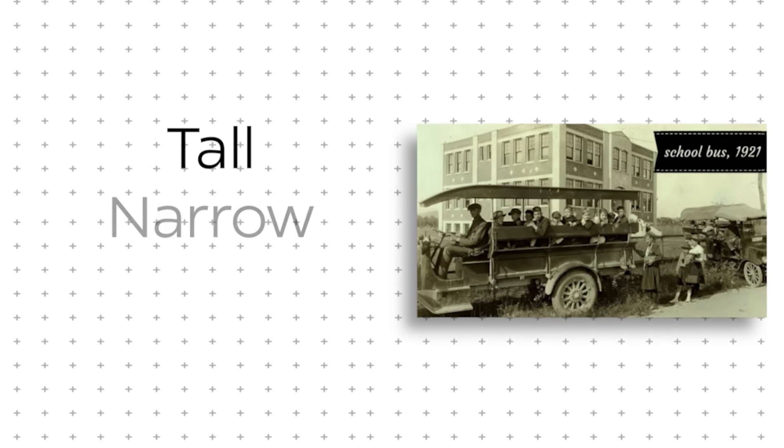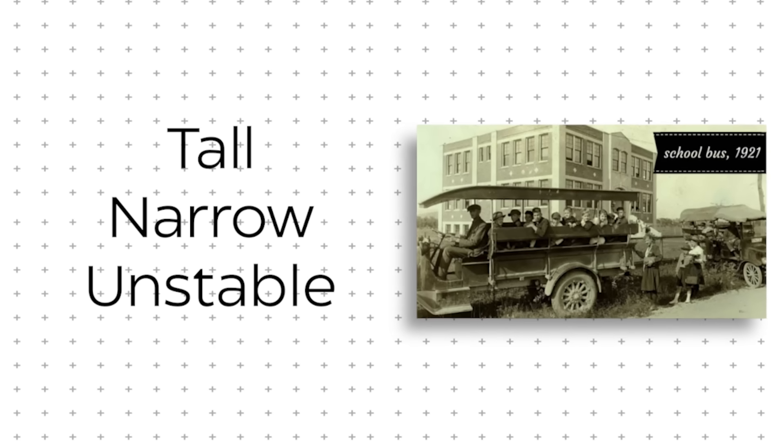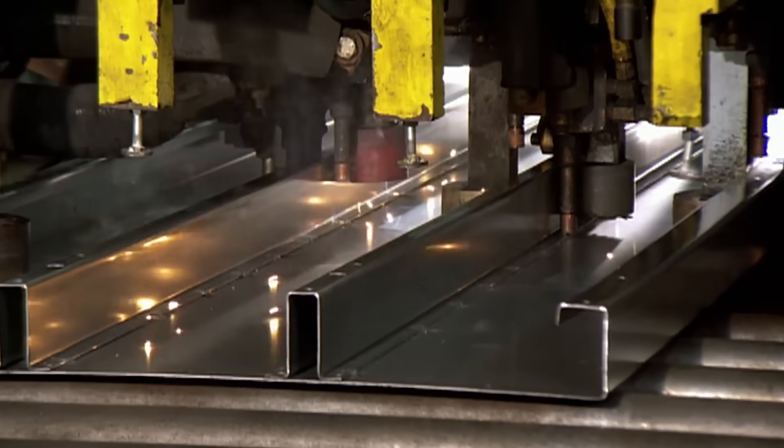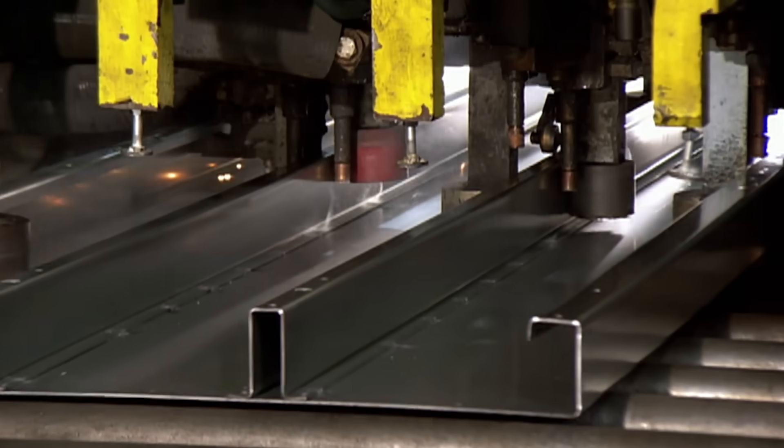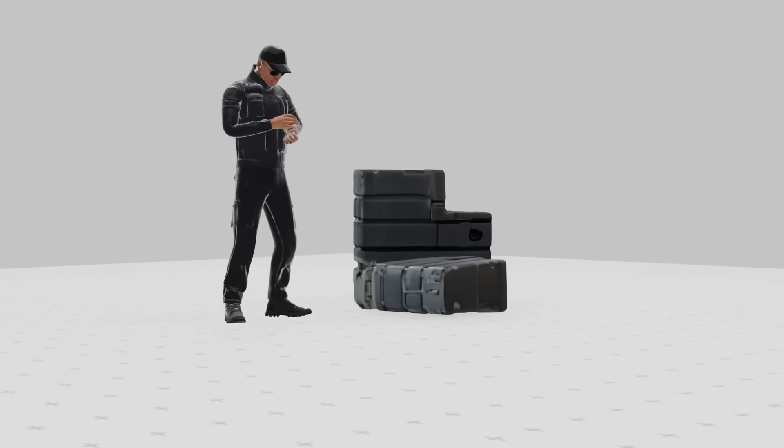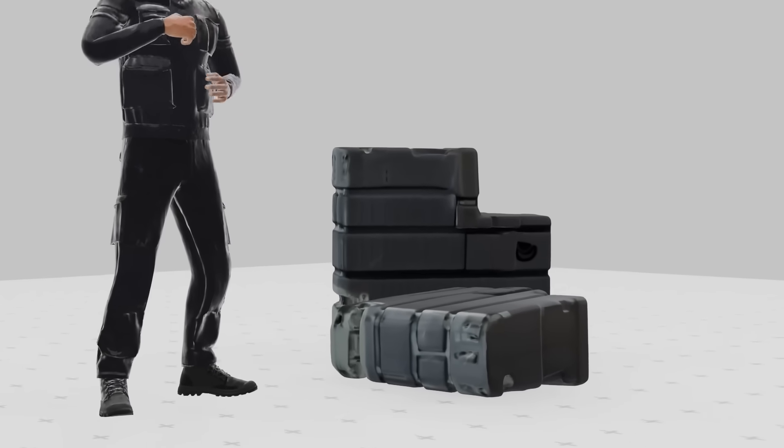These early buses were rolling death traps. Tall, narrow, and dangerously unstable. A sharp turn could send them tumbling over like a stack of crates. And if they crashed, there was no steel frame to absorb the impact, just splintering wood and flimsy sheet metal crumpling like foil. On top of that, exposed fuel tanks made fires a constant threat. A single spark could turn a minor accident into a deadly inferno.